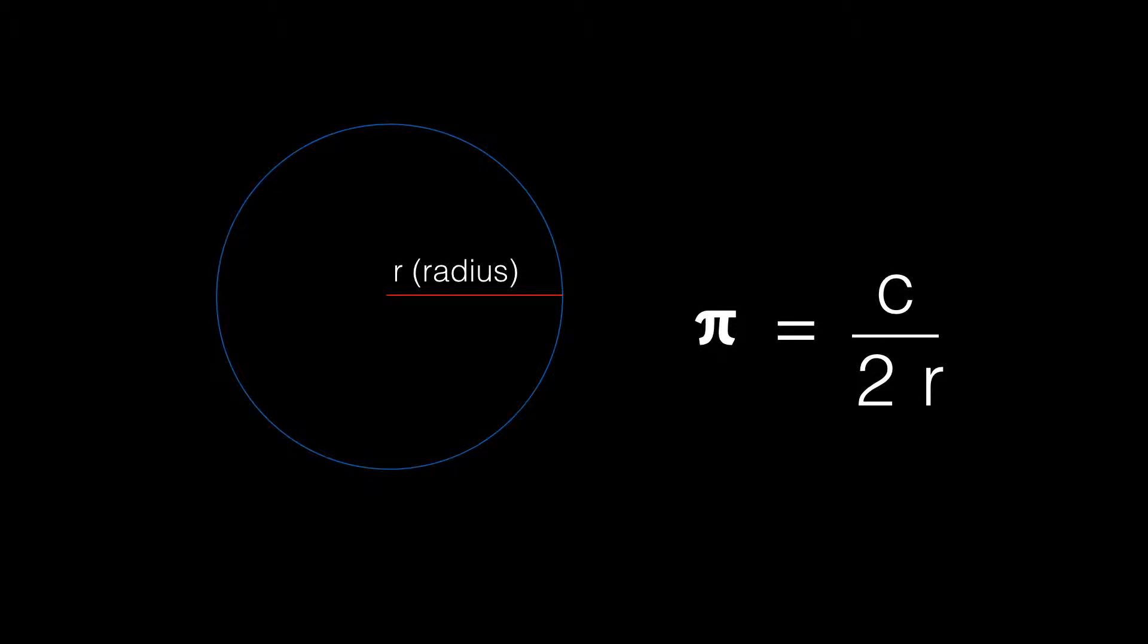Now the radius of a circle is half the diameter, from the center point out to the circumference. So it follows that pi equals C over 2R. We've taken the D out and replaced it with 2R because D equals 2R—two radiuses equal a diameter.